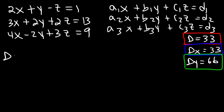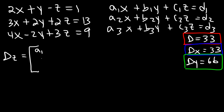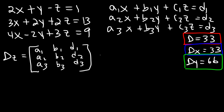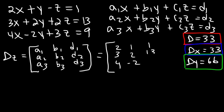Now let's move on to the last one, dz. In this case, the coefficients of z will be replaced with d1, d2, and d3. So it's going to be a1, a2, a3, then b1, b2, b3, and then d1, d2, d3. So we're going to have the numbers 2, 3, 4 — then 1, 2, negative 2 — and 1, 13, 9.